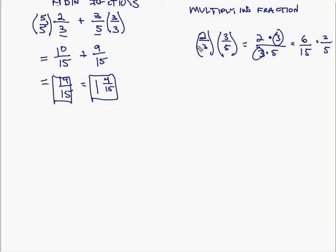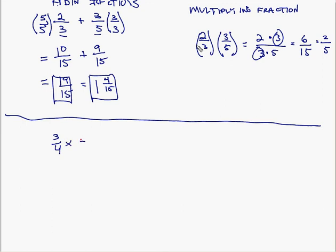So the rule for multiplying fractions: multiply the numerators together and multiply the denominators together. With these two operations in mind, let's look at an equation where fractions are involved. For instance, three-fourths x plus two-thirds equals five, and we need to solve for x. The easiest way is to try and get rid of the fractions. Looking at the denominators three and four, the smallest number that both fit into is twelve.